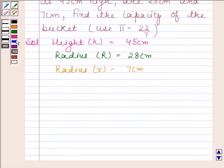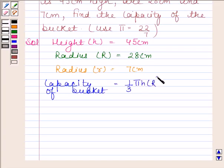Let us find capacity of the bucket. The bucket has the shape of a frustum and we know that volume of frustum is given by 1 by 3 pi h into R square plus r square plus R into r.